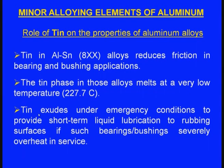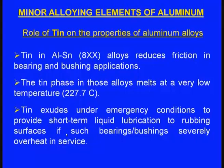This is the greatest advantage of using tin in bearings. In bearings, one part rubs over another part and most of the time we use lubricants. Sometimes the lubricant may be exhausted or there may be no lubricant, and heat will develop, and the parts will be damaged severely. At such times this tin exudes under emergency conditions and supplies a few minor drops of liquid tin at the rubbing surfaces, causing lubrication between the rubbing parts. This is the greatest advantage of tin.